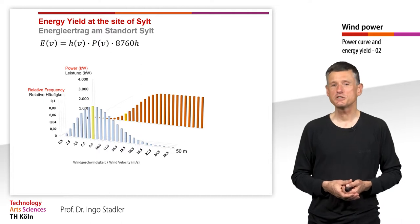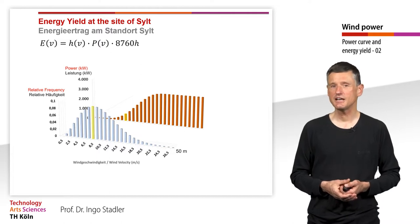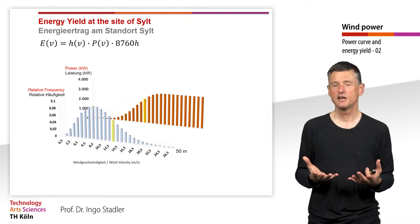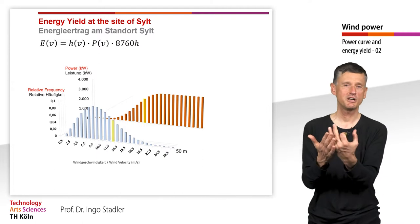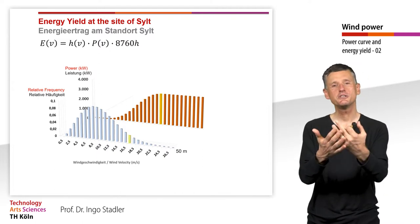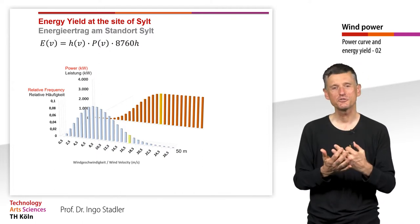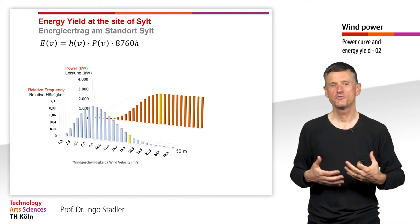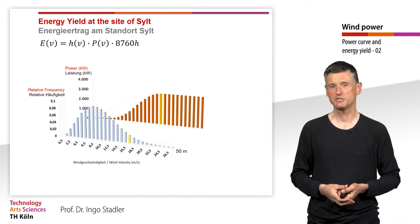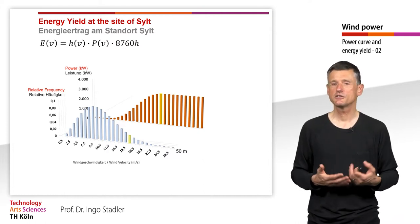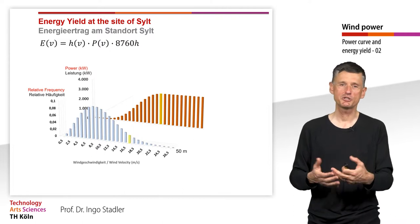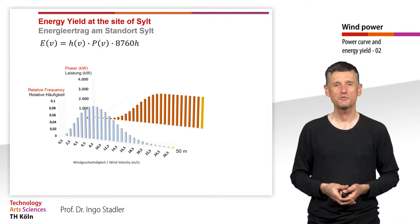As we increase through the wind speed classes, we get a high power output from the wind turbine, but already a decreasing contribution from the probability of those higher wind speeds. This decreases even further as we reach the nominal power.